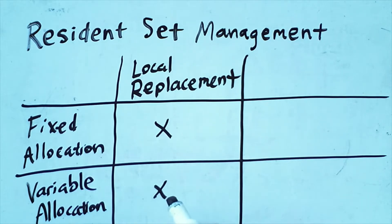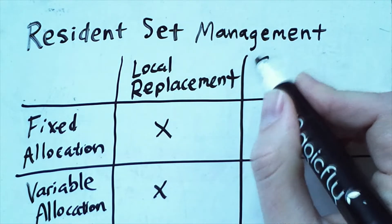When it comes to replace one, we have to pick a frame from the set assigned to that specific process. The alternative is to allow global replacement.